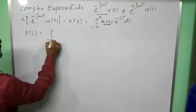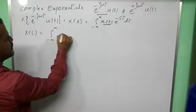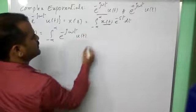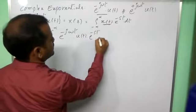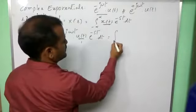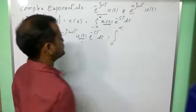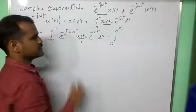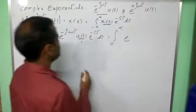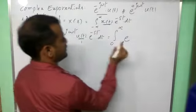Here x(t) we are substituting the complex exponential function, so X(s) equals integral from 0 to infinity of e^(-jωt)u(t) and e^(-st)dt. u(t) is equal to 1 over the interval 0 to infinity, and these two exponentials let us combine.